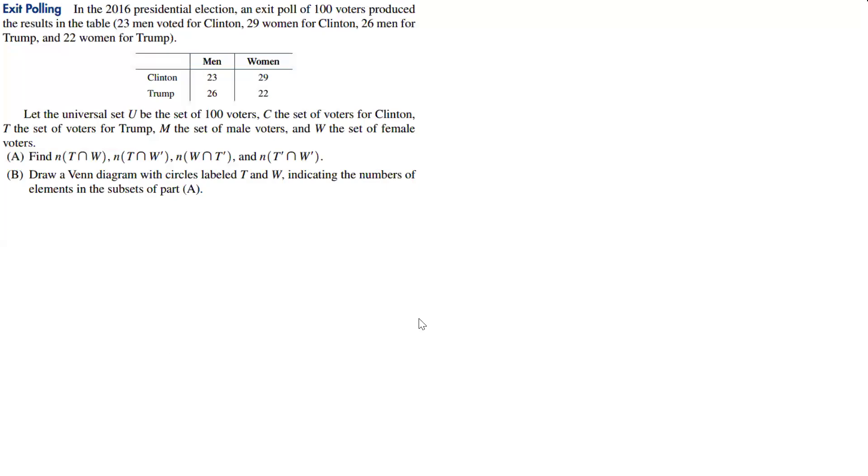Alright, so here, being a political time, in the 2016 presidential election, an exit poll of 100 voters produced the results in the table: 23 men voted for Clinton, 29 women for Clinton, 26 men for Trump, and 22 women for Trump. So that's our table.